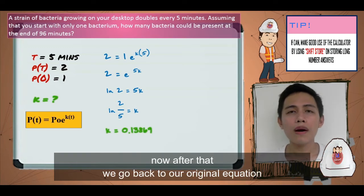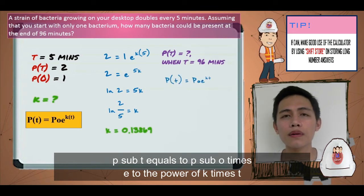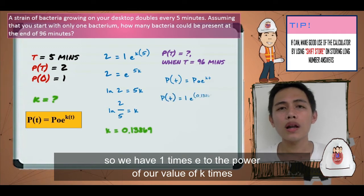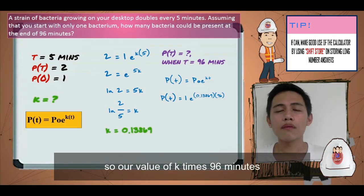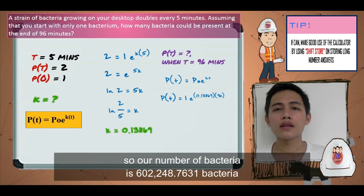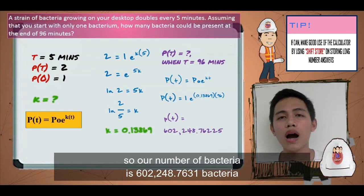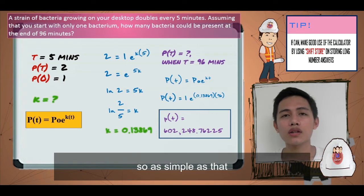After that, we go back to our original equation: P(t) = P₀e^(kt). Since we have our value of k, we just substitute it. We have 1 times e to the power of our value of k times 96 minutes. Our number of bacteria is 602,248.7631 bacteria. As simple as that.